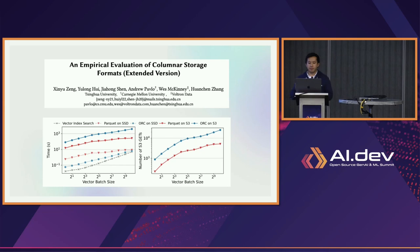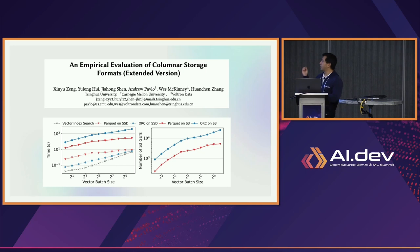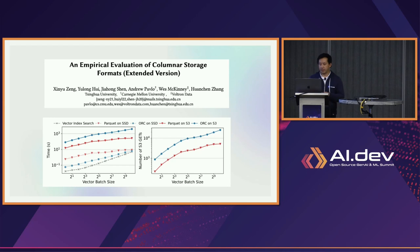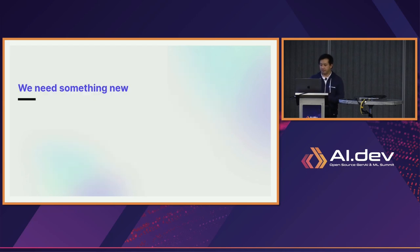There's a recent paper by folks at Tsinghua, CMU, Andy Pavlo, and Wes McKinney that looks at performance of Parquet and ORC in various environments — SSD and S3 — for representative machine learning workloads. If you look at vector index search timings for Parquet and ORC, you're looking at high numbers of seconds to minutes of response times, which is kind of ridiculous. You're not going to be able to get interactive responses from them. So we really need something new.